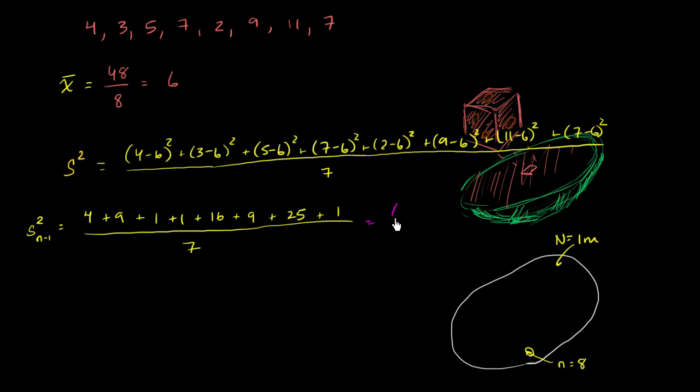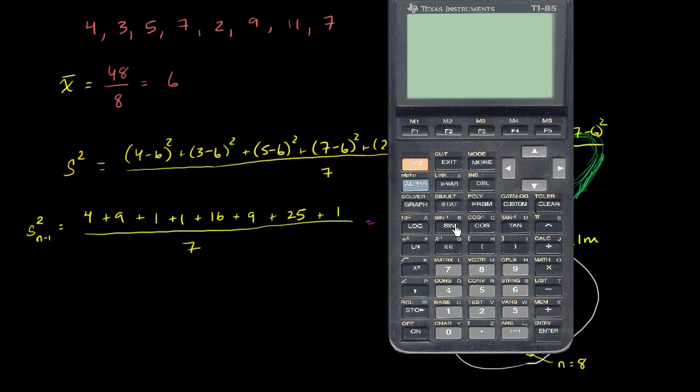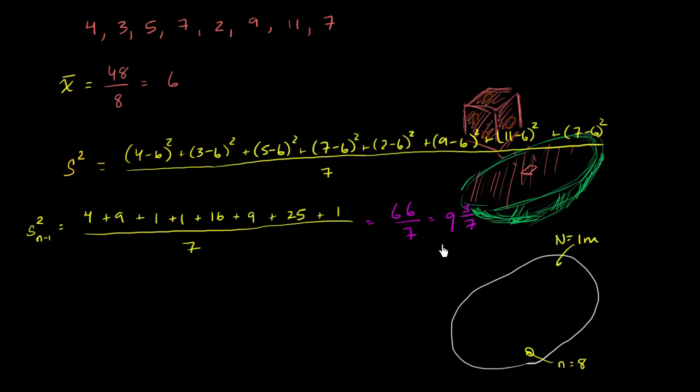So this is going to be equal to 66 over 7. And we could either divide, that's 9 and 3 sevenths. We could write that as 9 and 3 sevenths, or if we want to write that as a decimal, 66 divided by 7 gives us 9 point, I'll just round it, so it's approximately 9.43.